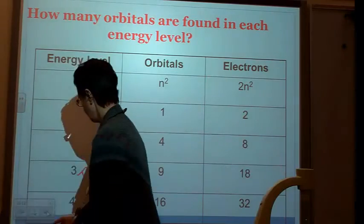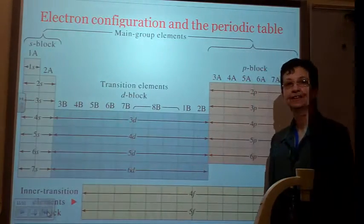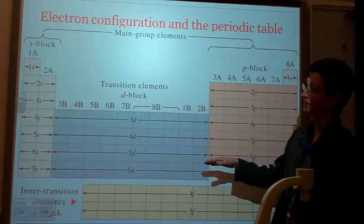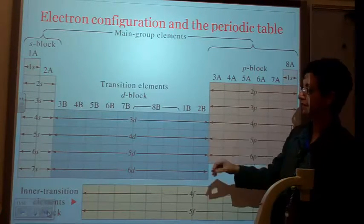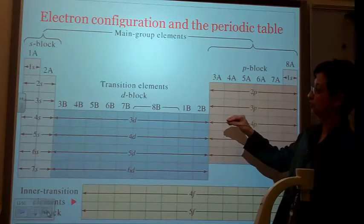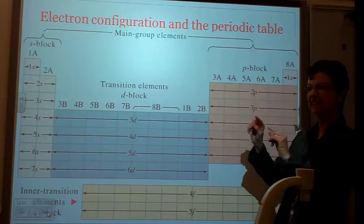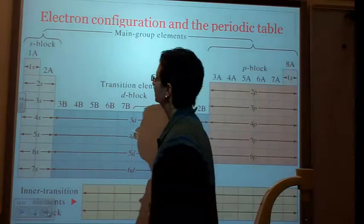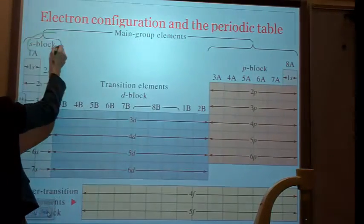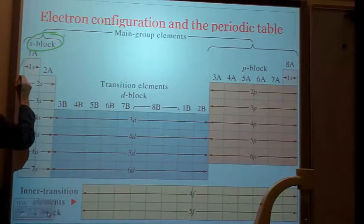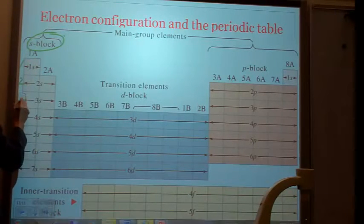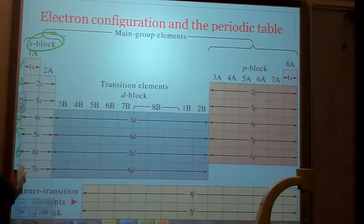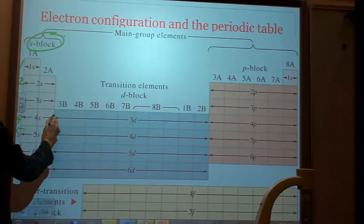So now, the only thing left to do is tomorrow, we're going to color the periodic table just like this. So I'd like you to make a little notation. I want you to kind of make a diagram of the periodic table, just so you know that this is the S block. One, two, three, four, five, six, and seven levels.